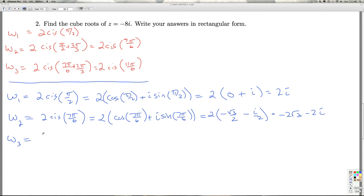And finally W3, 2 cis 11 pi over 6. 2 cosine 11 pi over 6 plus i sine 11 pi over 6 is 2 times, the cosine of 11 pi over 6, that's a positive square root 3 over 2, minus i over 2, which is square root 3 minus i. And I just see I spotted a mistake here, the 2's cancel out. And so I get that. So that'll do it then for number 2.